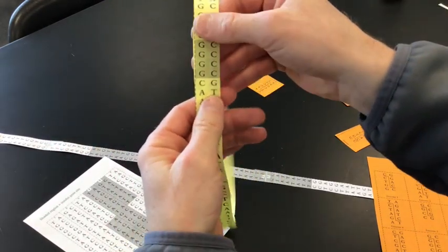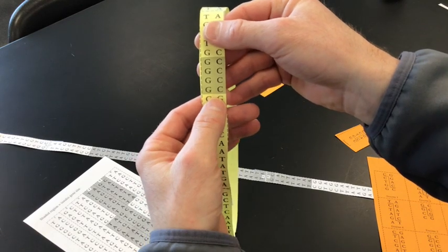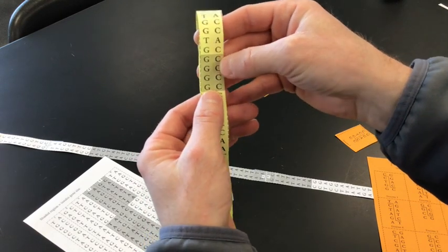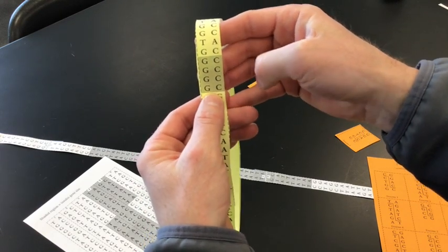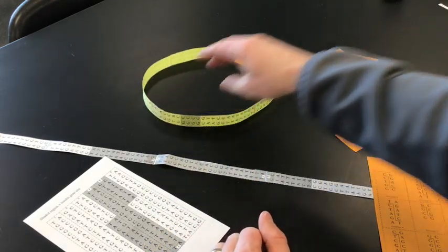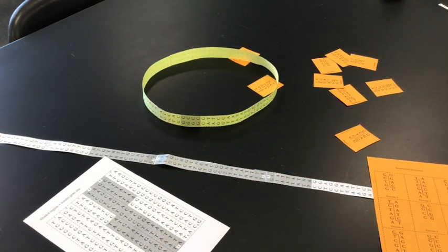And then there's one shaded region on here that we're going to call the origin region, origin of replication. So we want to make sure that whatever we do we don't cut that section of the plasmid. Otherwise it won't be able to replicate itself.